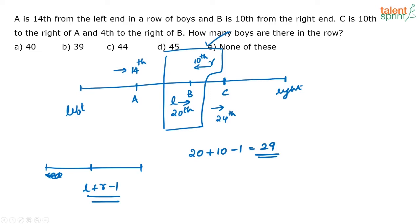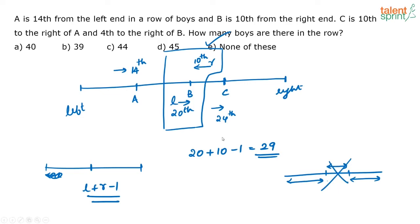Generally in ranking questions, we look at how many people are before a given person. But in this particular question, the best approach involves very few calculations: just find the positions of the people from the left and right ends. The normal method — counting people before A and between A and B — is more time consuming. The faster way is to fix B's position from both ends and use the formula to find the total number of people in the row.